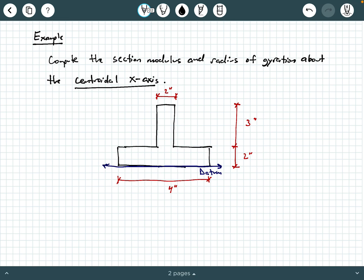In this example, we're being asked to compute the section modulus and radius of gyration about the centroidal x-axis of this upside-down T shape.